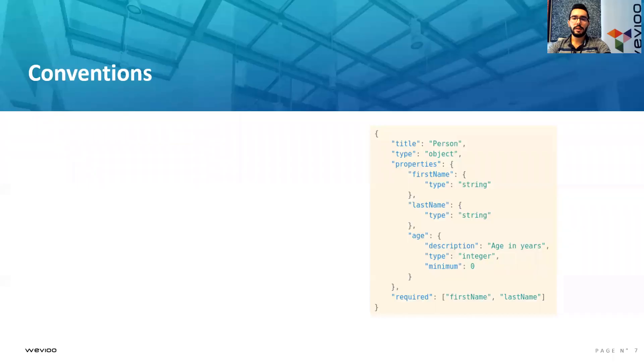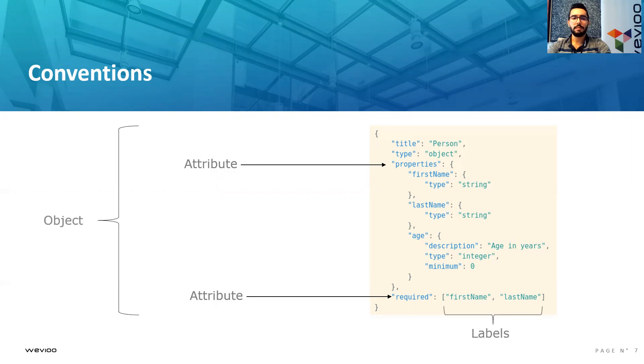Before moving on with explaining our method, we will be defining some conventions. By attribute, we mean properties, type, title, or required. Required is the type of variables we will be dealing with in the first step of K-modes. It has an array, a list of labels, a list of values. Here in the example, it has two values, but we might have an attribute with hundreds of values. These are called labels, and the whole document, we call it object.